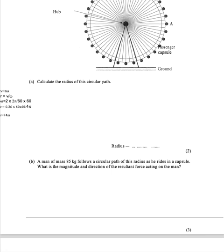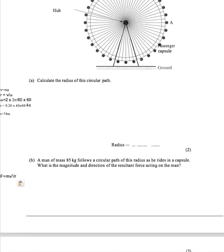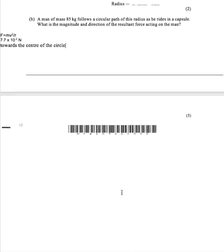So here I'm going to say F is mv squared over r. I know v, I know r from up here, 0.26 by 60 by 60 over 4 pi. So if I stick in my numbers to that, I will get 7.7 times 10 to the minus 2 newtons. And it says what is the direction? Well, of course, the direction is towards the center of the circle.